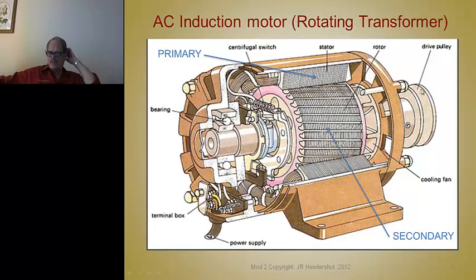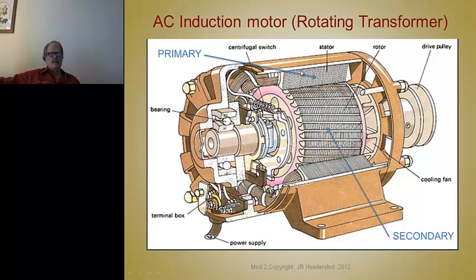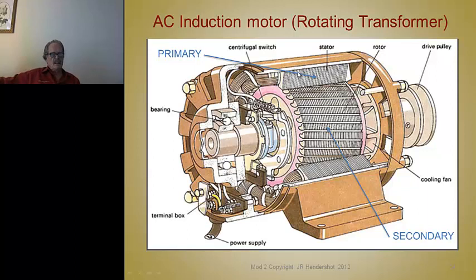Here's a cutaway of a single-phase induction machine — the type used in a washing machine. The rotor is die-cast with copper or aluminum conductors along the bars, with a cooling fan attached. The stator has two-phase windings and a centrifugal switch, because it's operated on single-phase power but wound for two phases so it will start. It starts as a two-phase motor; when it reaches a certain speed, the centrifugal switch opens the starting winding circuit, and the motor runs less efficiently on only one winding.